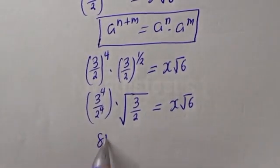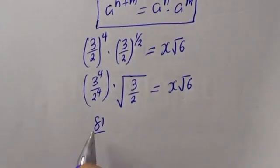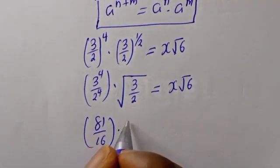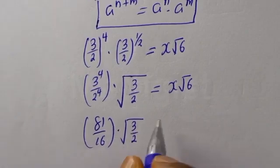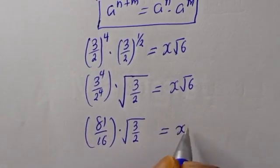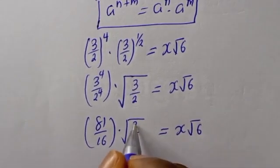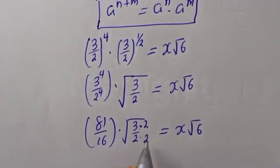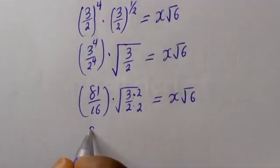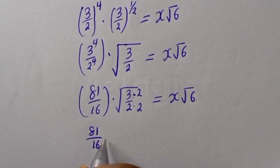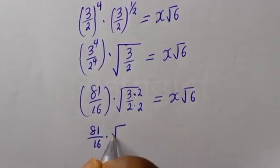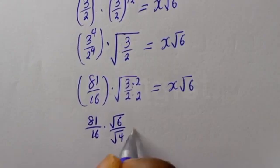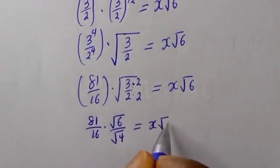3 raised to the power 4 is 81, and 2 raised to the power 4 is 16, multiplied by root 3 over 2, is equal to s root 6. Now let's multiply both the numerator and denominator by 2: we have 81 over 16, multiplied by 2, over 2, which gives 81 over 16 multiplied by square root of 6 over square root of 4.